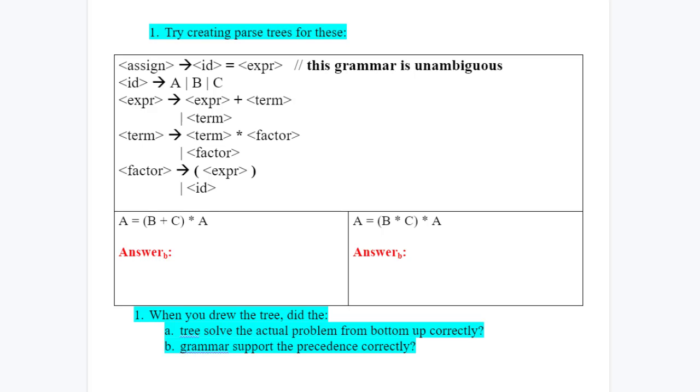So go and draw out a parse tree for them, and then when you drew the parse tree, did the tree solve the actual problem from bottom up correctly, and did the grammar support the precedence of those operators correctly?